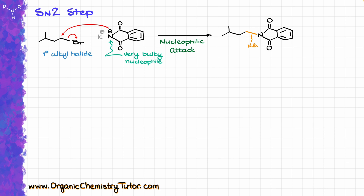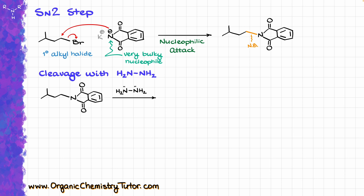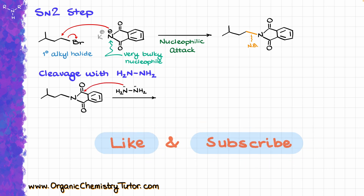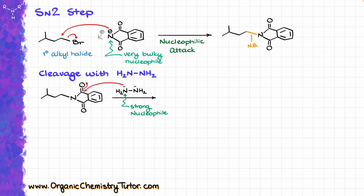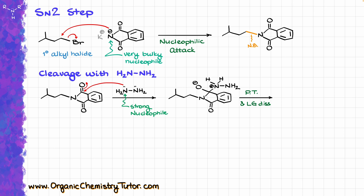When we have this intermediate, we continue to cleave the phthalamide portion, and the most common cleaving agent is hydrazine. The first step is the reaction between our hydrazine and one of our carbonyls — the nitrogen comes in and kicks the electrons up. This happens relatively easily because the nitrogen in the hydrazine molecule is a very strong nucleophile, so it will react even with an unreactive electrophile such as an amide. Following the normal steps for acyl substitution — proton transfers and leaving group dissociation — we essentially break the carbon-nitrogen bond and open up our molecule.